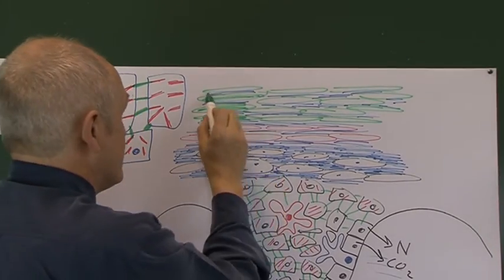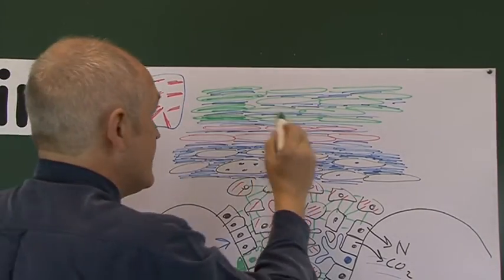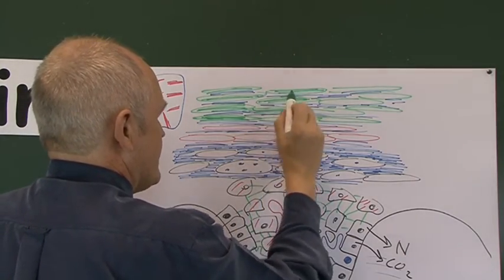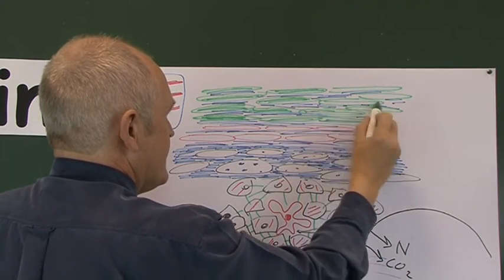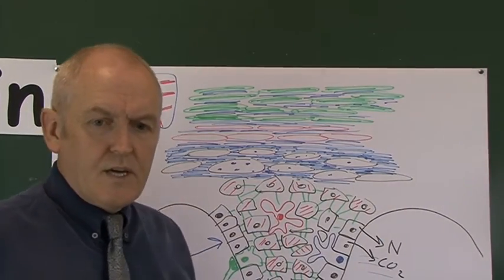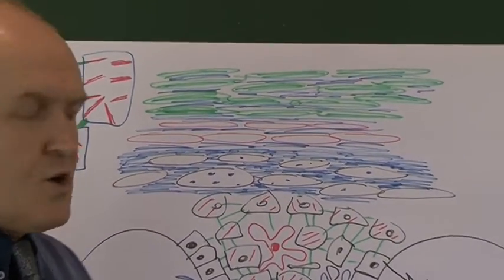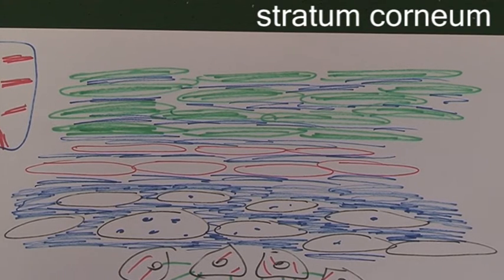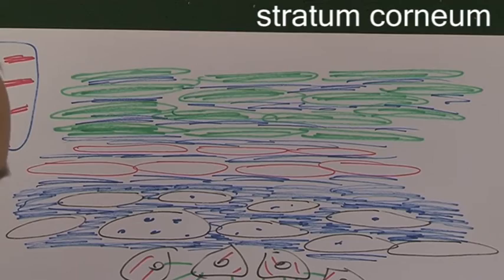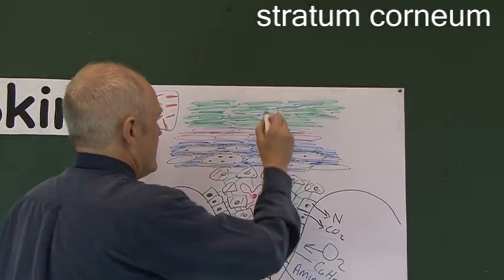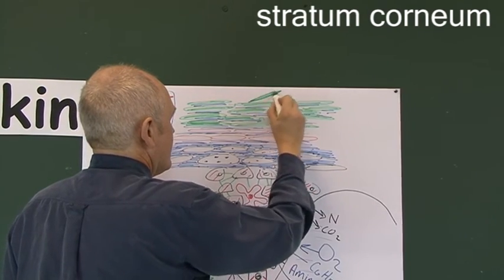These cells have been dead for some time and are now heavily keratinised. This outer layer is called the stratum corneum — the corneum is the outer horny layer. It's quite a thick layer of dead, keratinised, horny cells, and as the cells reach the surface they eventually just slough off and are lost.